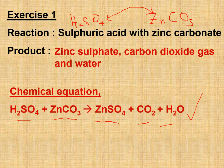Let's recap the three chemical properties of acid. First: acid reacts with bases to give salt and water. Second: acid reacts with metal to give salt and hydrogen gas — the metal must be more electropositive than hydrogen. Third: acid reacts with metal carbonate to give salt, carbon dioxide, and water.